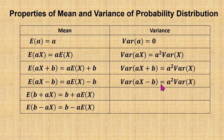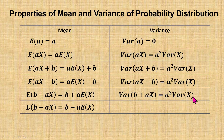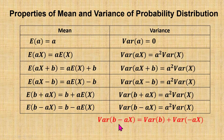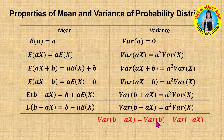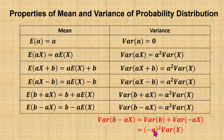Similarly, variance of aX minus b equals a squared times variance of X. Variance of b plus aX equals a squared times variance of X. For variance of b minus aX, when we separate this, we get variance of b plus variance of negative aX. Taking out the constant negative a gives negative a squared, but negative a squared equals positive a squared. So therefore, variance of b minus aX equals a squared times variance of X. Generally, the value of variance is always a positive value.